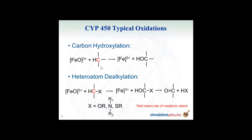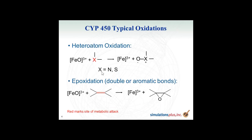This slide shows typical CYP P450 oxidation. In the first example, we have a carbon atom being hydroxylated — an oxygen is inserted between the carbon-hydrogen bond. In heteroatom dealkylation, the carbon is next to either an oxygen, nitrogen, or sulfur atom; when hydroxylated, it forms an unstable intermediate that can decompose into the aldehyde or ketone, plus either the alcohol, thiol, or amine.